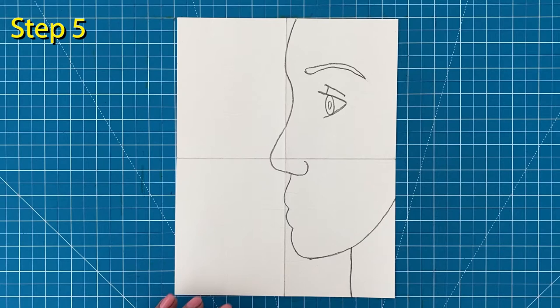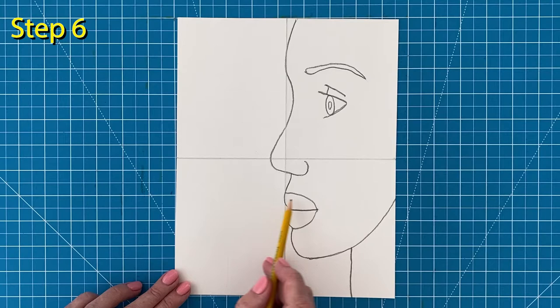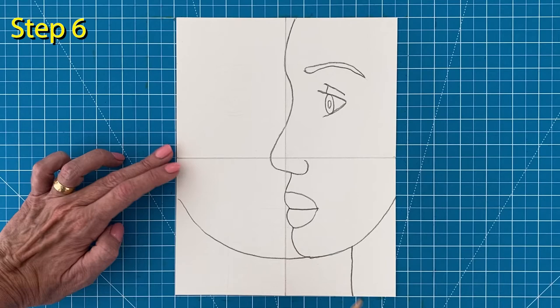Step number six: To draw the other half of the face, use the right side to measure where the left cheek should start and draw it to match. Add a line to complete the neck below.